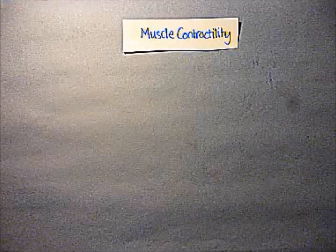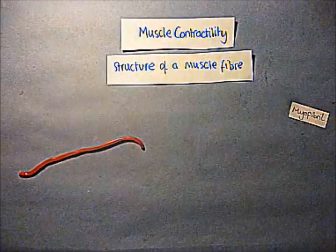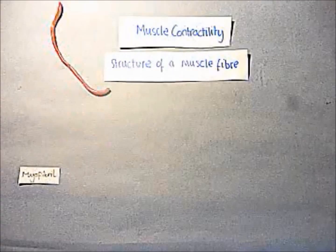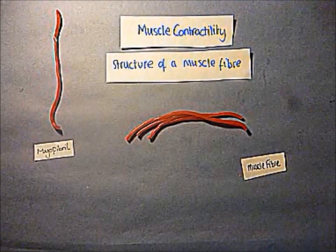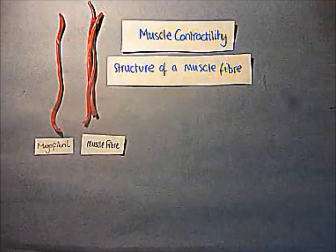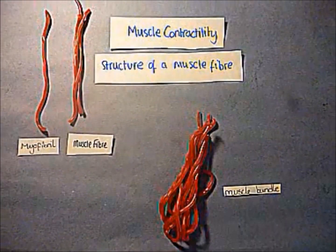Muscle contractility. The structure of a muscle fiber. Muscle fibers are made up of myofibrils. The fibers group together to form muscle bundles, which can be used to make up body muscles.